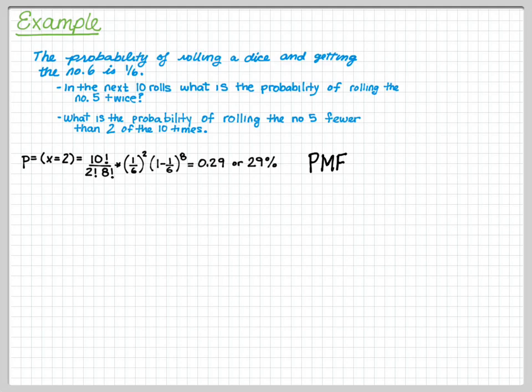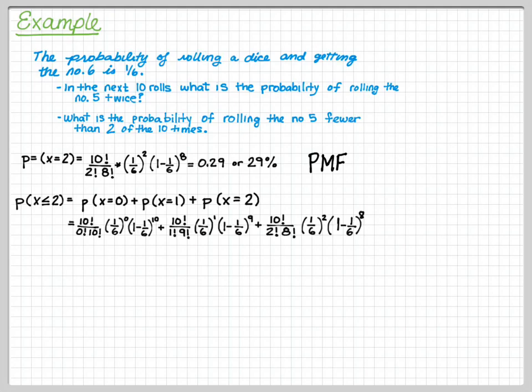Next, we want to think about, what about rolling the number 5 fewer than 2 of the times? In that case, we're looking at the probability that x is less than or equal to 2. It includes 2, but fewer.